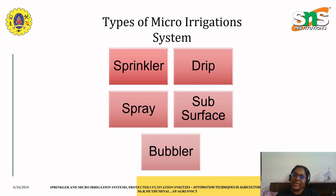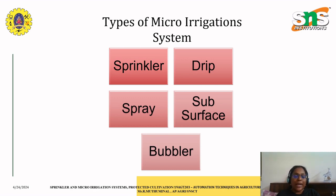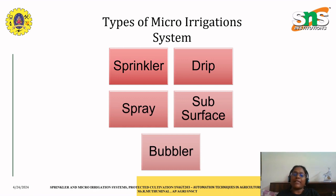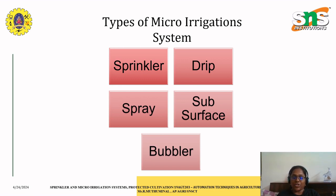The next common micro irrigation system, after sprinkler, is the drip irrigation system. This method delivers water directly to the root zone of plants through a network of tubes, emitters, and valves. Benefits include water efficiency, as water is precisely distributed to the roots of the plant, minimizing evaporation and runoff and helping conserve water. It also reduces weed growth and improves plant health. Some drip irrigation systems deliver fertilizers or nutrients directly to the root zone, ensuring optimal plant nutrition.